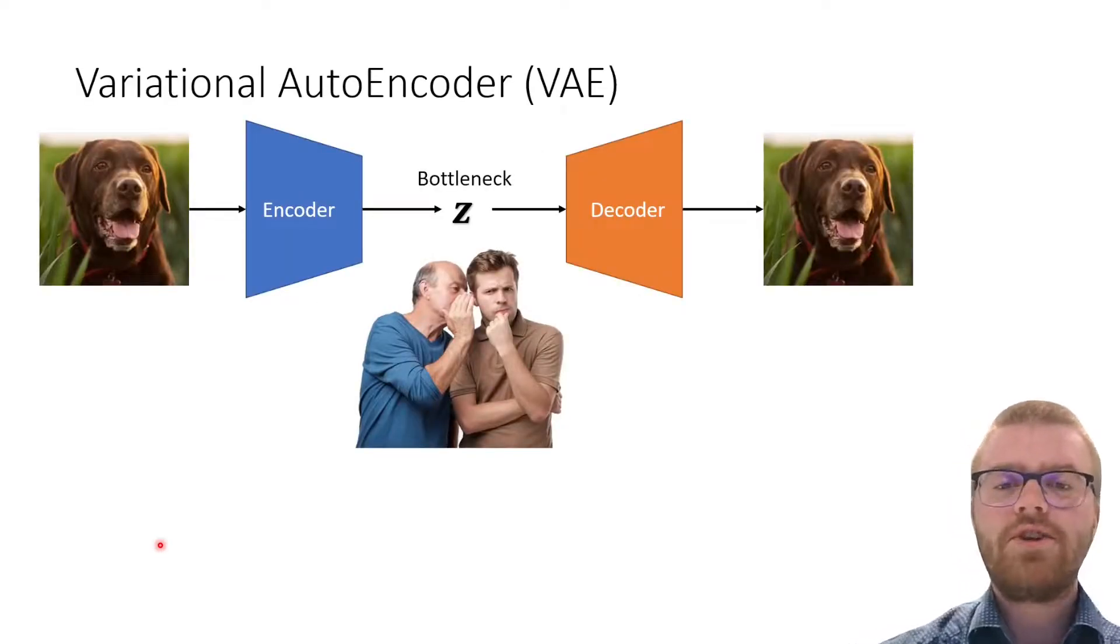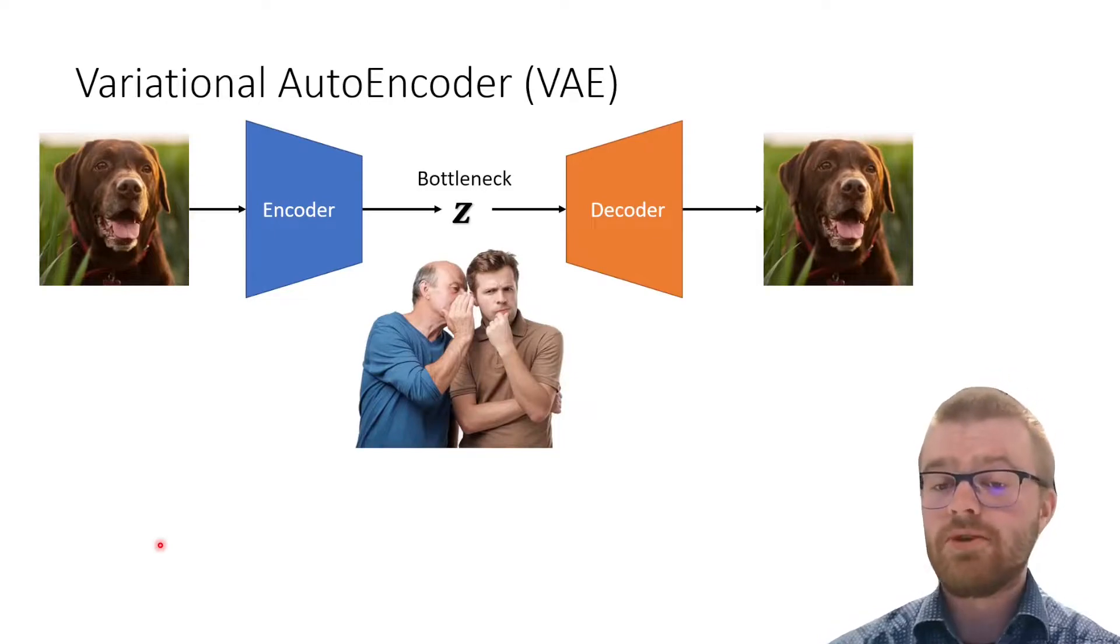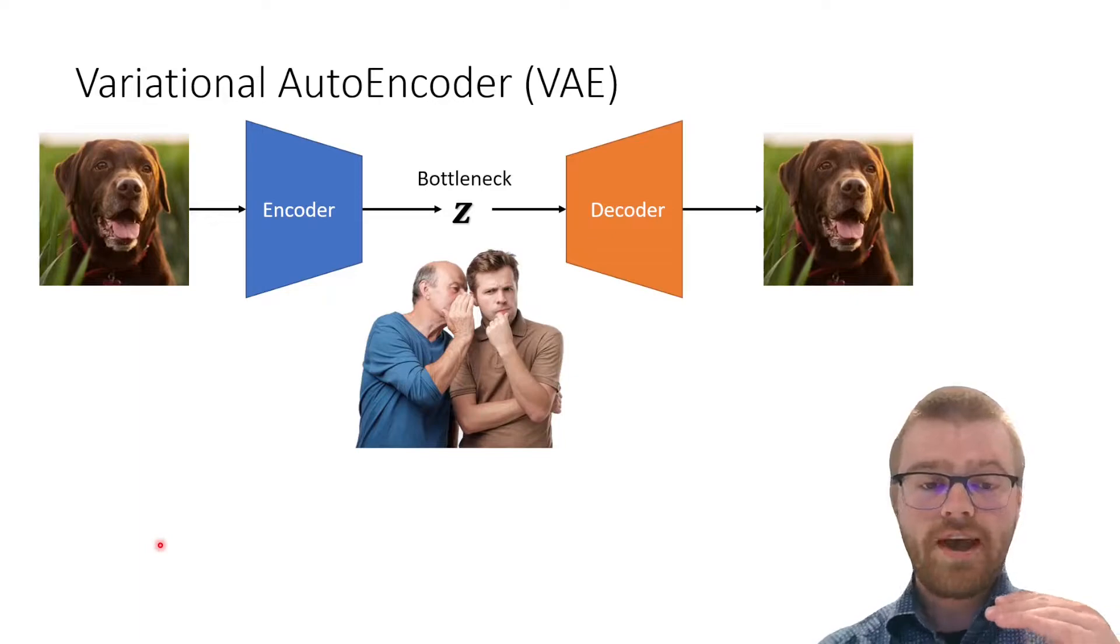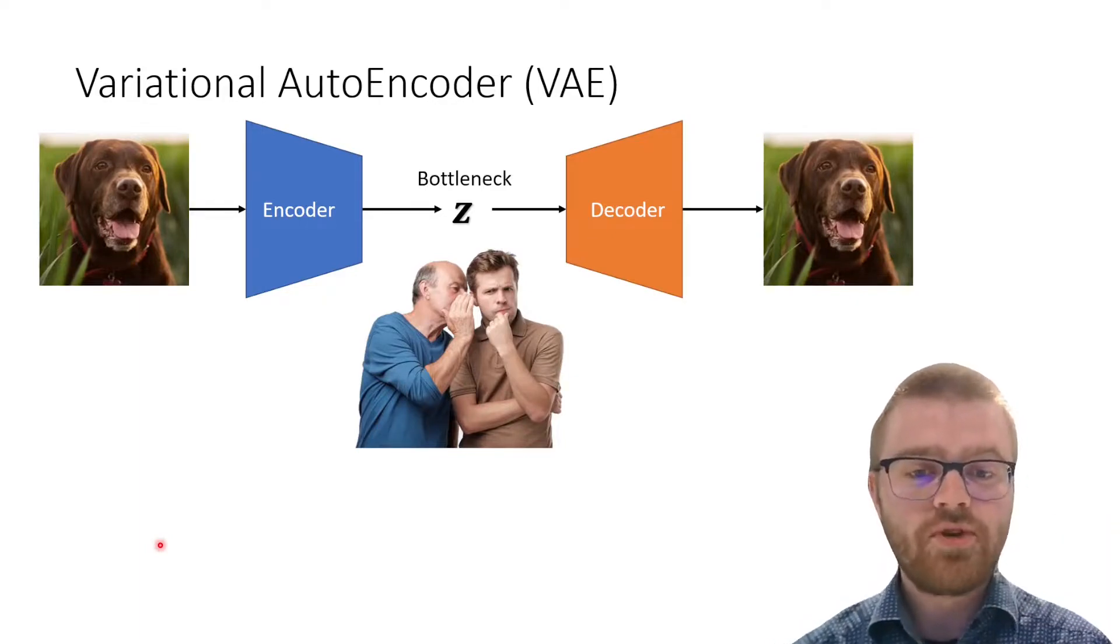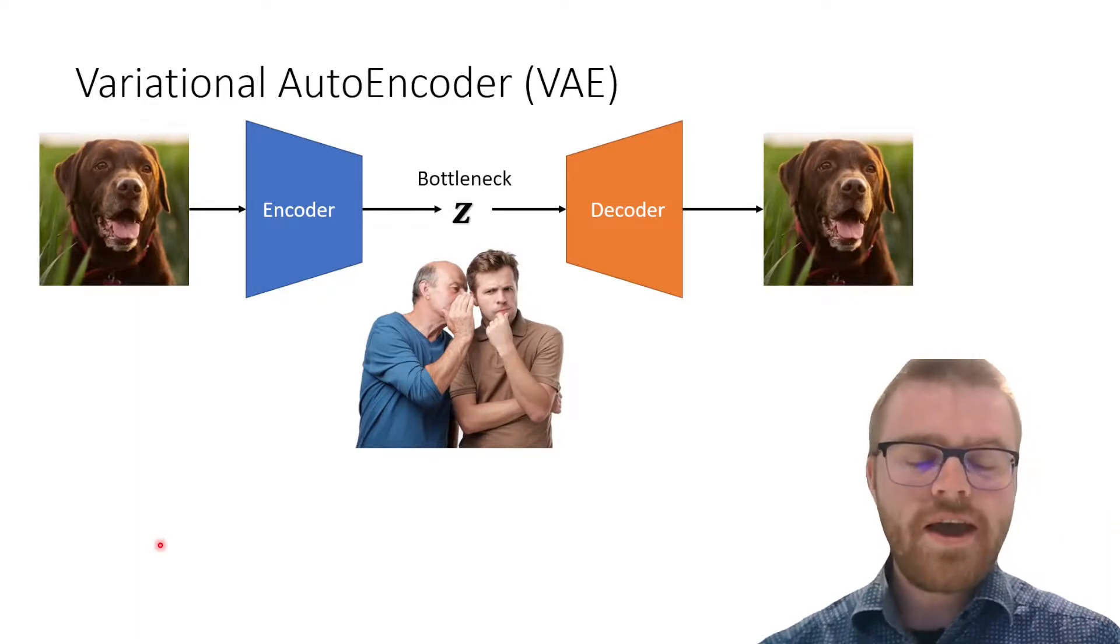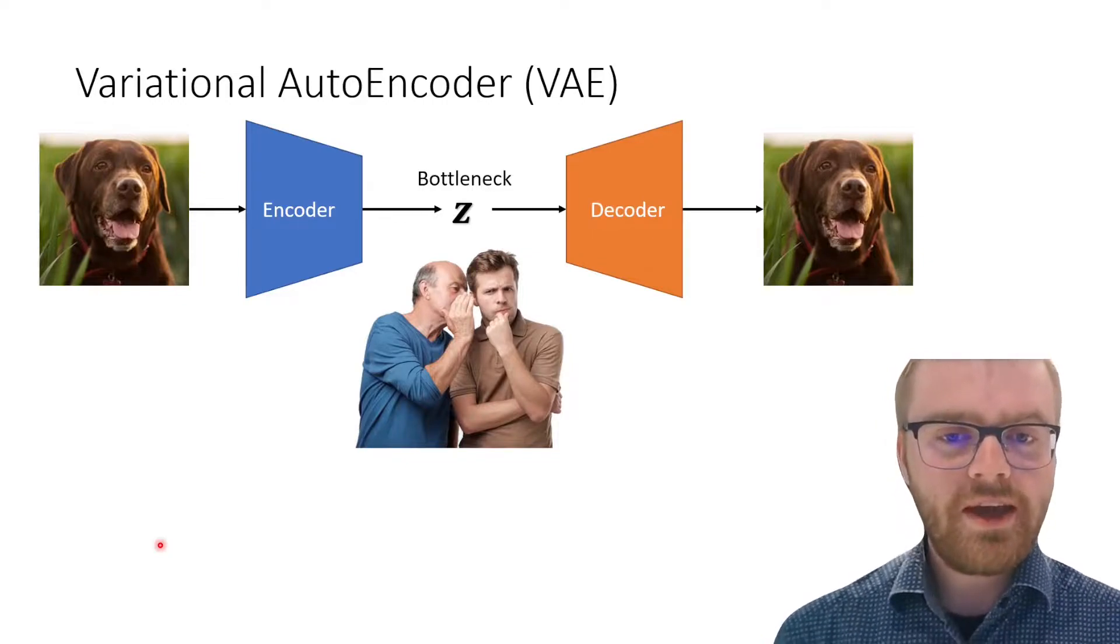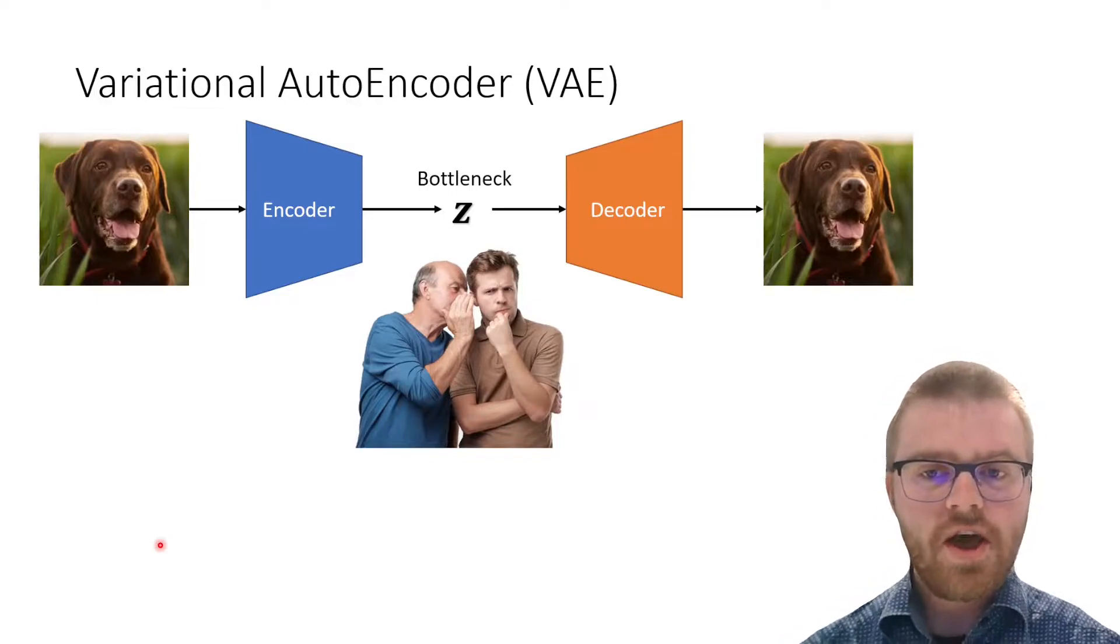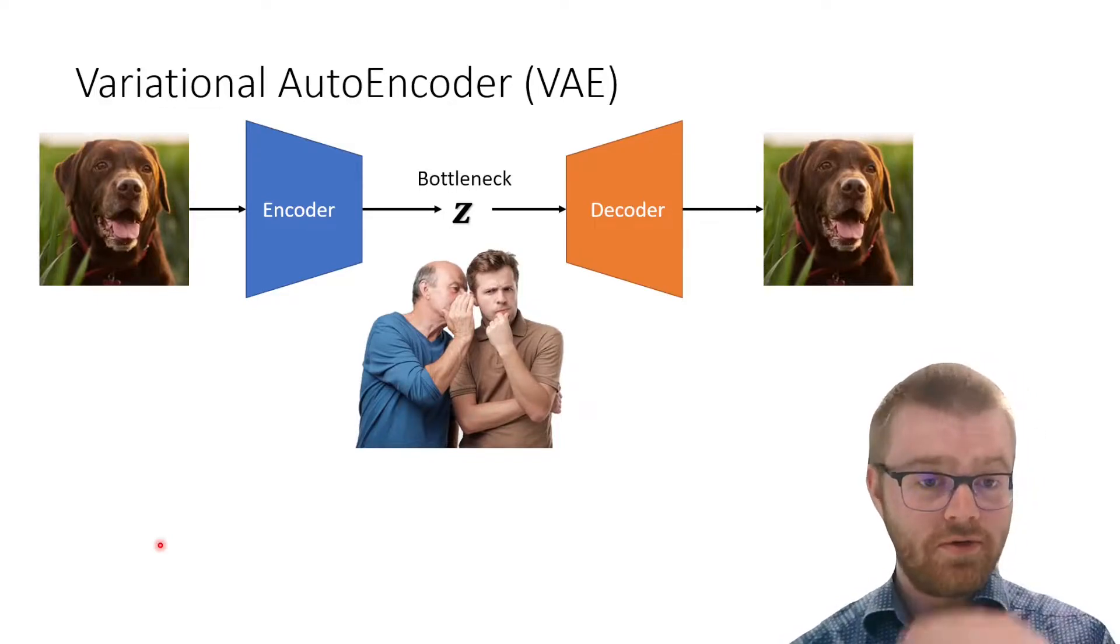A variational autoencoder is very similar to a normal autoencoder, where we map an input through some bottleneck and try to reconstruct that input on the other end. The way I like to think about this bottleneck is as though we are trying to whisper the most important information about the input through it.